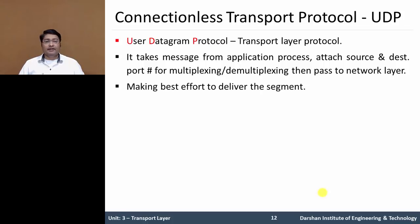The network layer encapsulates this transport layer segment into an IP datagram and then makes a best effort attempt to deliver this segment to the receiving host. If the segment arrives at the receiving host, UDP uses the destination port number to deliver this segment's data to the correct application process.